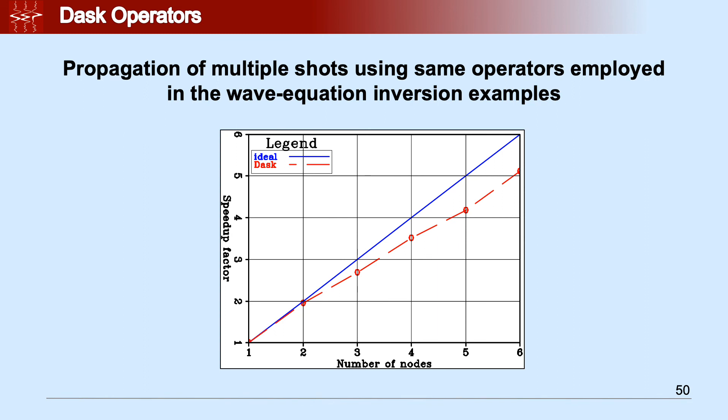To test the scalability of the Dask operator class, we decided to take the wave equation nonlinear operator that was used in the FWI case that I showed you before, and see what kind of speedup we can obtain using multiple nodes. Here in this graph, I'm showing you the number of nodes employed during the test versus the speedup factor.